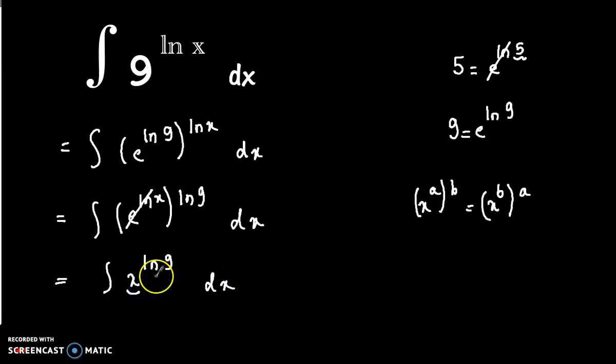And now we have a variable x and a constant power, which is very easy to integrate. We know that the integral of x to the power n dx is equal to x to the power n plus 1 over n plus 1 plus c.